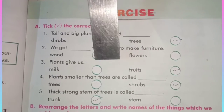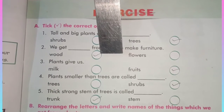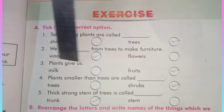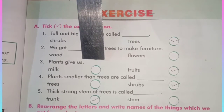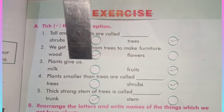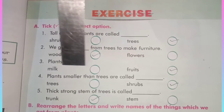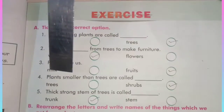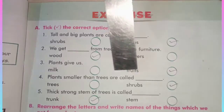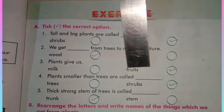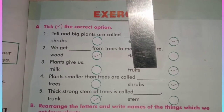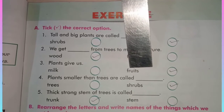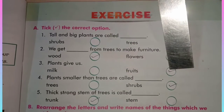So we will tick on wood. Our next question is: Plants give us? There are two options here. Which is the correct option students? Milk or fruit? Yes, fruit. Fruit is the correct option. So we will tick on fruits.